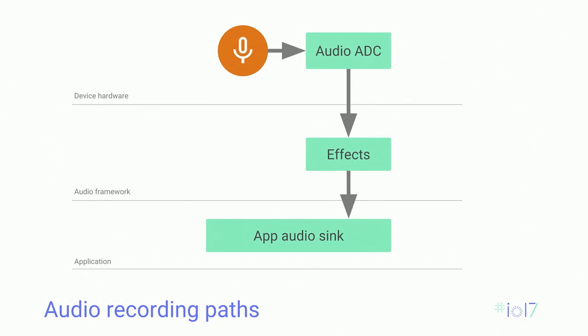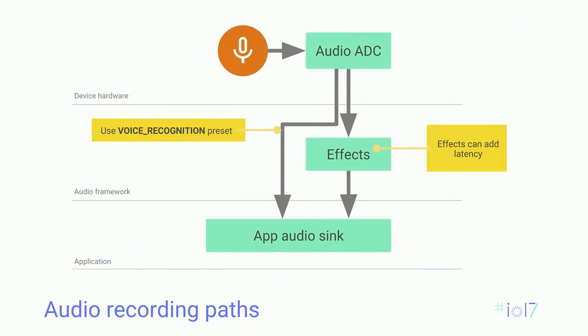For audio recording, the signal path goes from an analog microphone through an analog-to-digital converter, through effects such as noise cancellation and echo cancellation, and then digital data is delivered to your app. Effects can add latency, so for low latency apps we want to avoid them. There is a route through the system to avoid this added latency: use the voice recognition preset. The other thing to remember is to use PCM 16 format, which allows the audio framework to avoid format shifting that could potentially add latency.